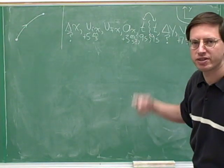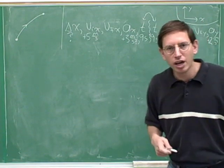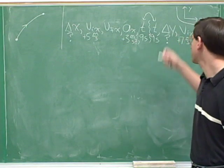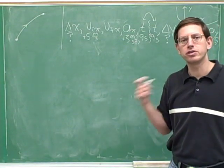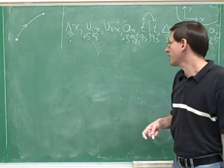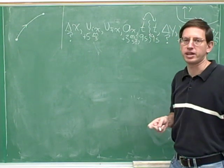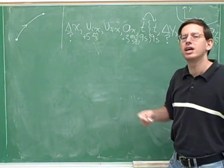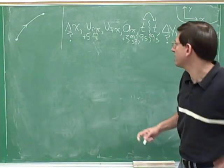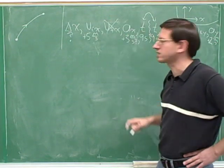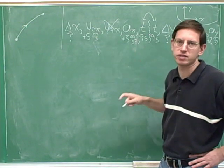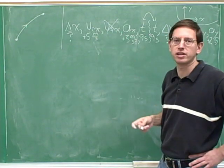Now we're ready for step five: choose a kinematics equation. Here we need two equations — one for x and one for y. You know you're ready when you know three of the kinematics variables. We know three x variables, so we're ready to pick an x equation. Pick the equation that's missing the variable you don't care about — here we don't care about the final x velocity, so pick the equation missing v_final x.